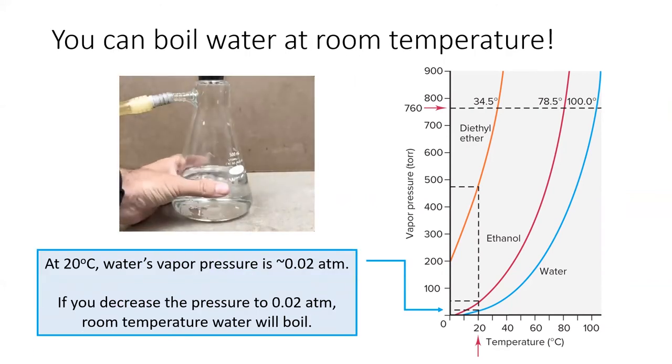In fact, you can boil water at room temperature, provided you lower the surrounding pressure to below 0.02 ATMs, which is water's vapor pressure at 20 degrees.